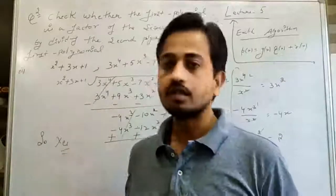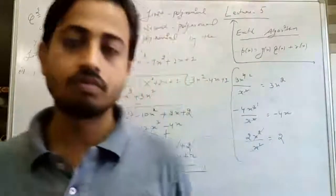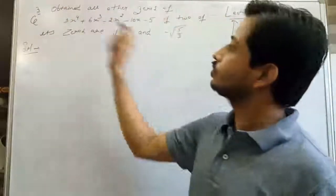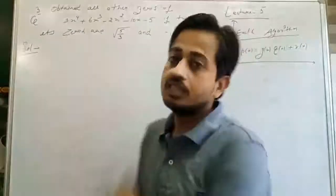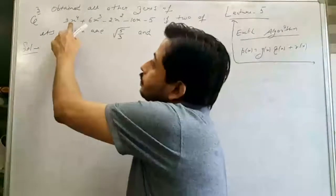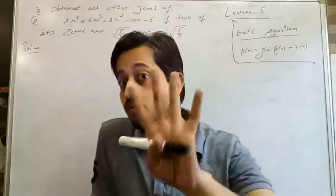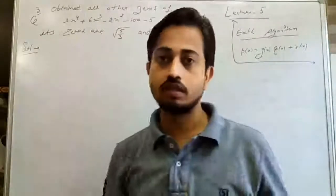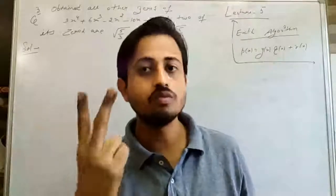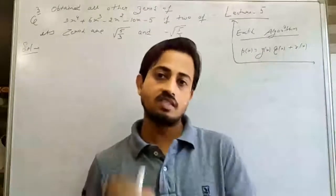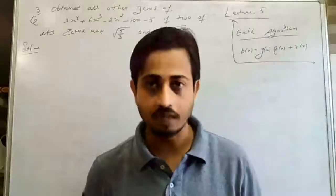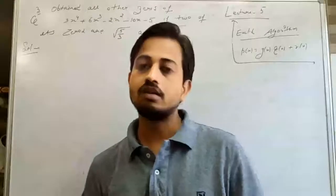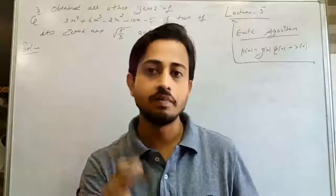Now the third question: obtain all other zeros of the polynomial if two of its zeros are given. The polynomial has degree 4, which means it has 4 zeros, since the number of zeros equals the degree of the polynomial. Two zeros are already given, so we need to find the remaining two zeros. This is a very important question and is most probably asked in your final exams.